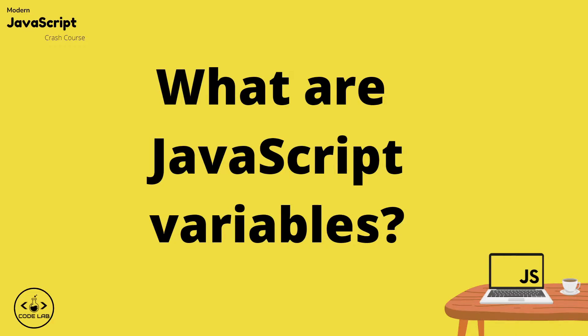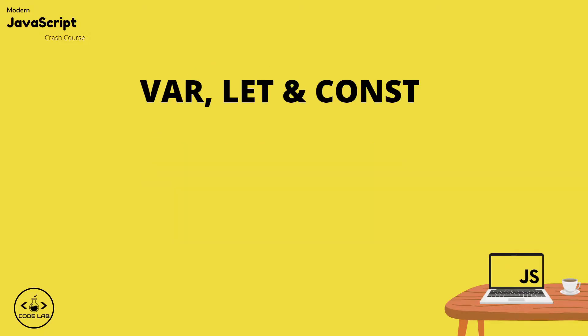Now before you can actually name a variable it has to be declared, and we can do this with three different keywords. Those three keywords are var, let, and const. Now there is a difference between the three, so before we dive into the differences let's just have a quick history lesson.